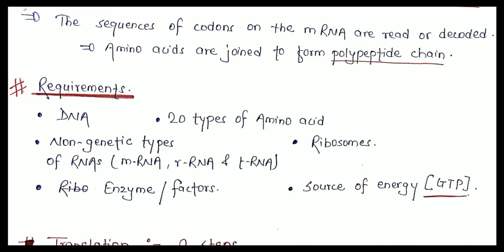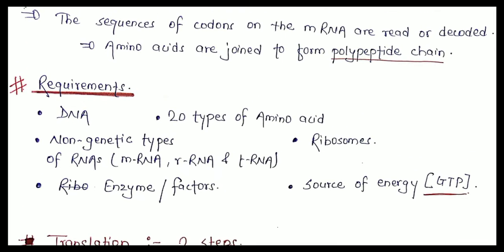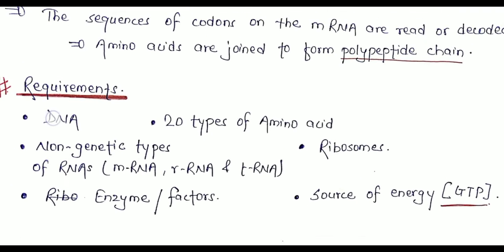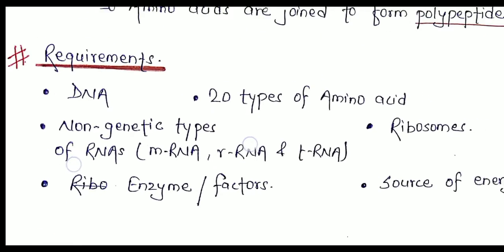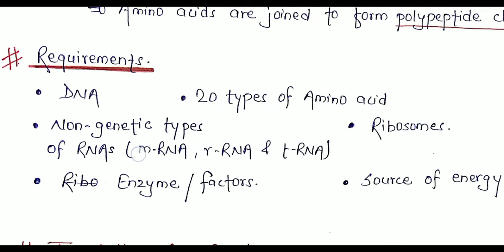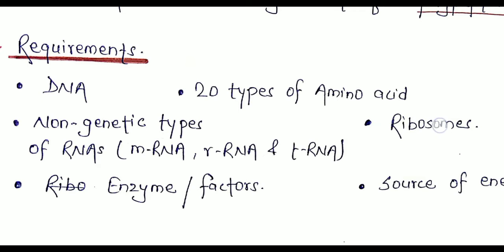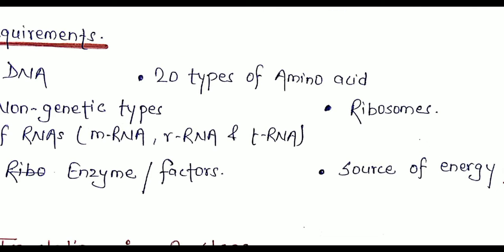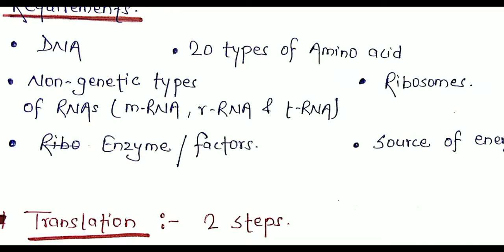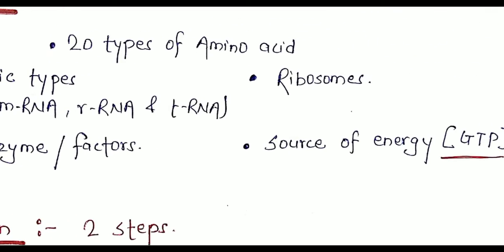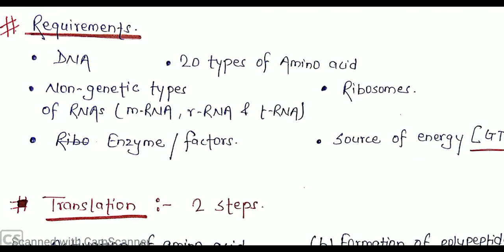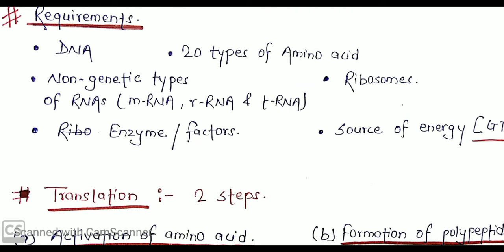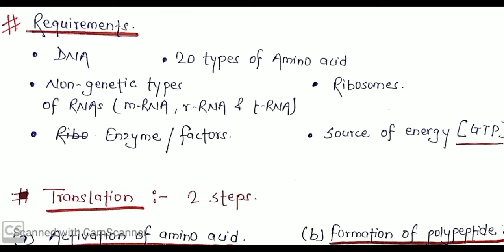The requirements for the translation process are: DNA, 20 types of amino acids, and non-genetic types of RNA — that is mRNA, rRNA, and tRNA — a ribosome (either 70S or 80S), enzyme factors, and of course a source of energy, GTP. Translation usually proceeds in two major steps: activation of amino acids and formation of the polypeptide chain.